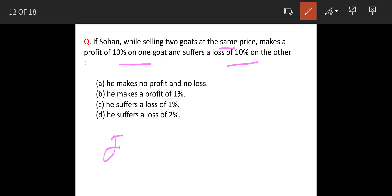So that means goat one, let's assume, was sold at 110 rupees. Here he makes 10% profit. Goat two, as per the question, the price is the same, so that means it is again sold at 110, but here the loss is 10%.